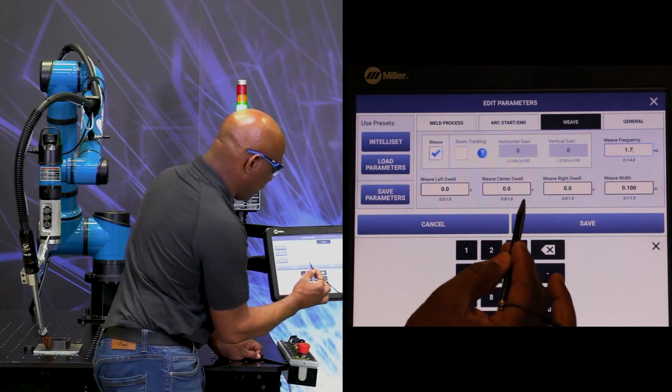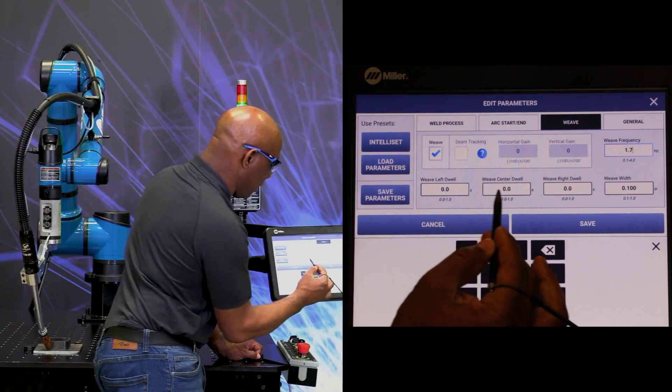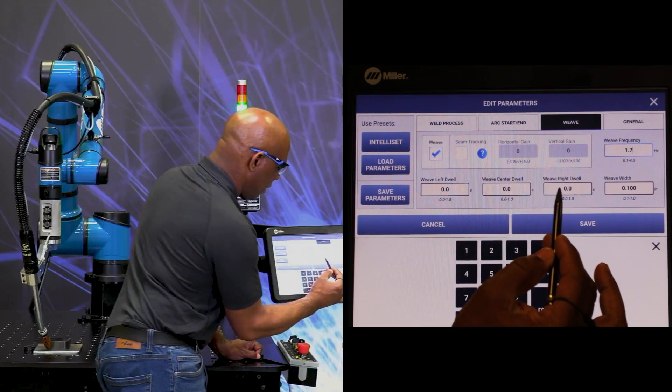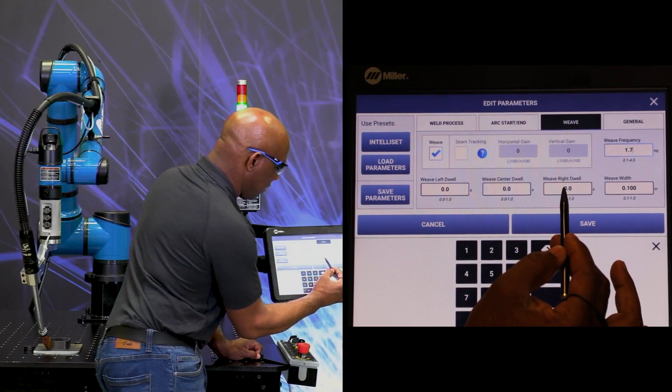We have our dwell time. This is dwelling on the legs of the weave. The dwell is dwelling in the center of the weave and the joint.